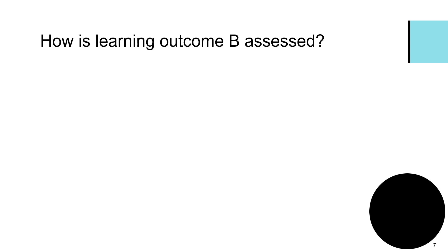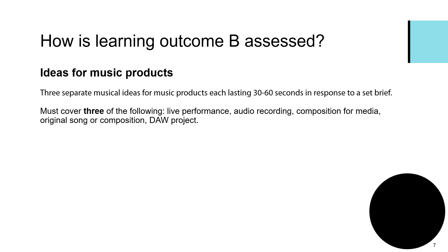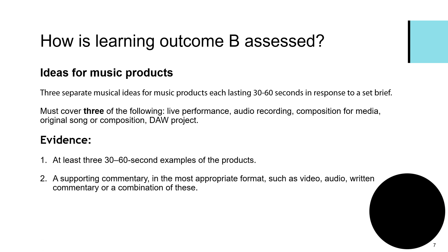Looking at how learning outcome B, task two, is assessed: learners have been asked to produce and create three separate musical ideas for music products in response to a set brief. This is where the theme — for example, travelling — comes into play. The music products that learners develop must be in response to that set brief. Learners cannot just ignore it and perform or compose anything they like, as that will disadvantage them.